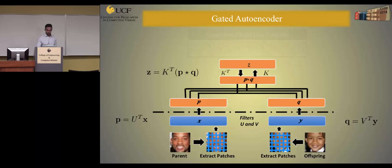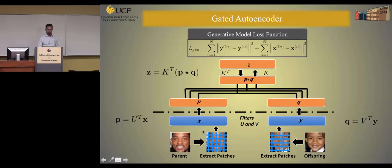Once we have Z, given Z and a basis expansion of Y, we can reconstruct input X, which we call X prime. Similarly, given Z and a basis expansion of X, we can reconstruct input Y, called Y prime. Given X, Y, X prime, and Y prime, we write our loss function to minimize the reconstruction error.